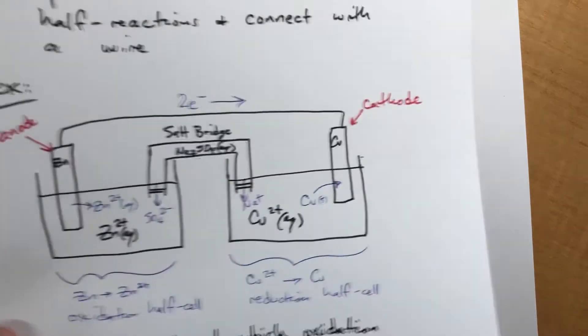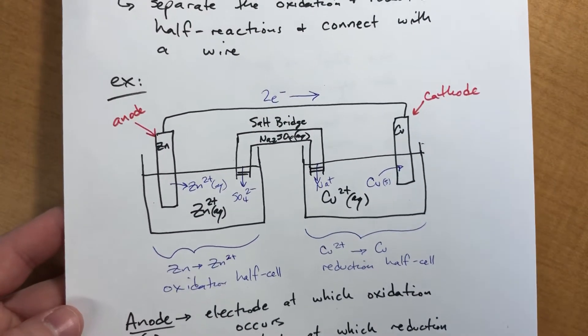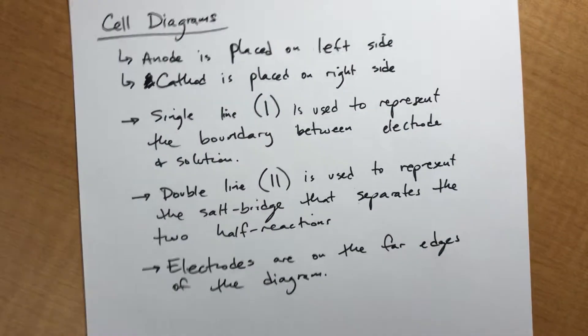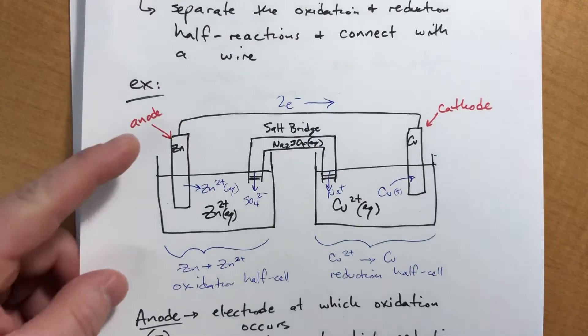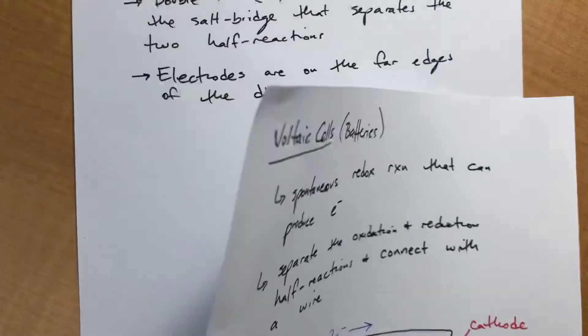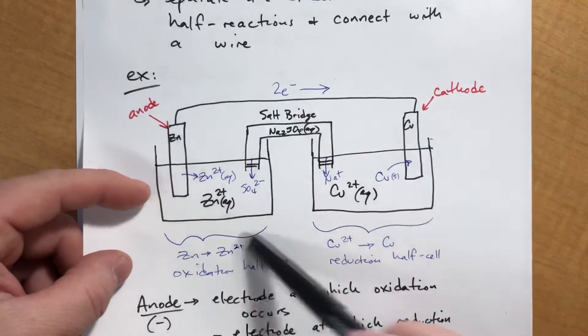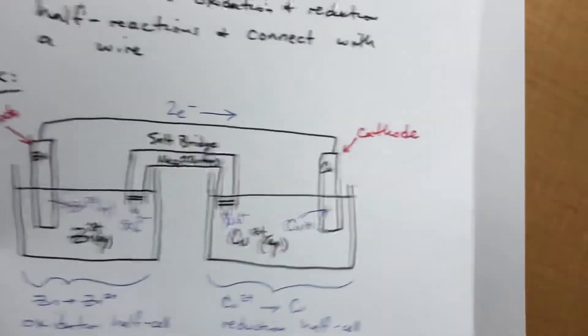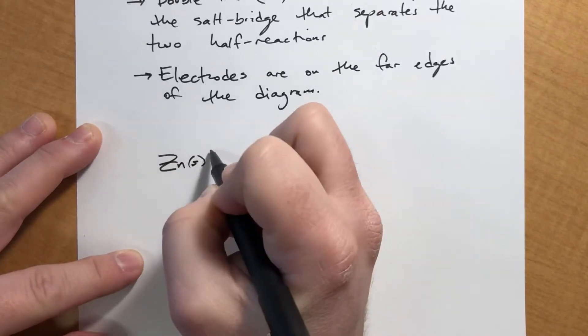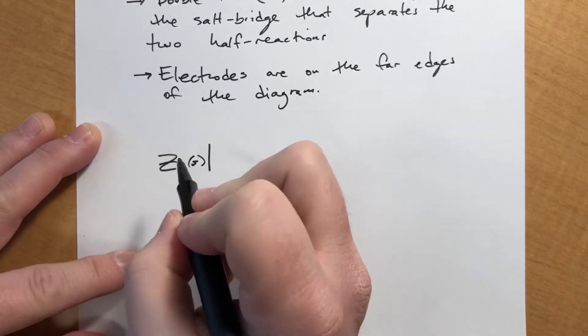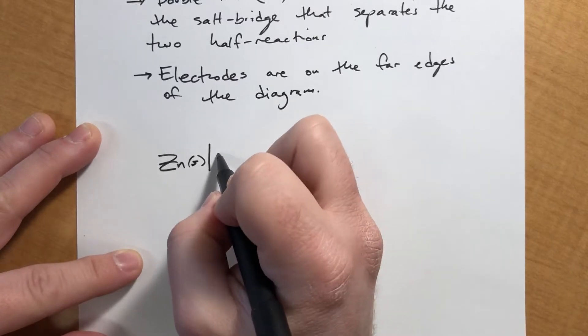So if we wanted to represent this voltaic cell using a cell diagram, we said the anode is on the left side, which is already how I had it drawn, but that's okay. This is supposed to blend nicely to cell diagrams. We draw the zinc on the far end. We have to put state symbols on everything. It's a solid. And there's a single line separating the electrode and the solution.